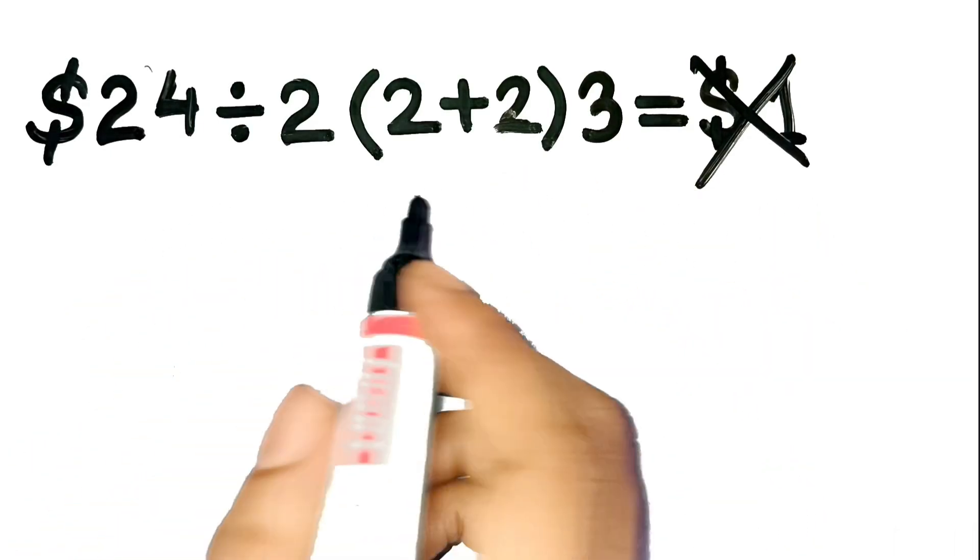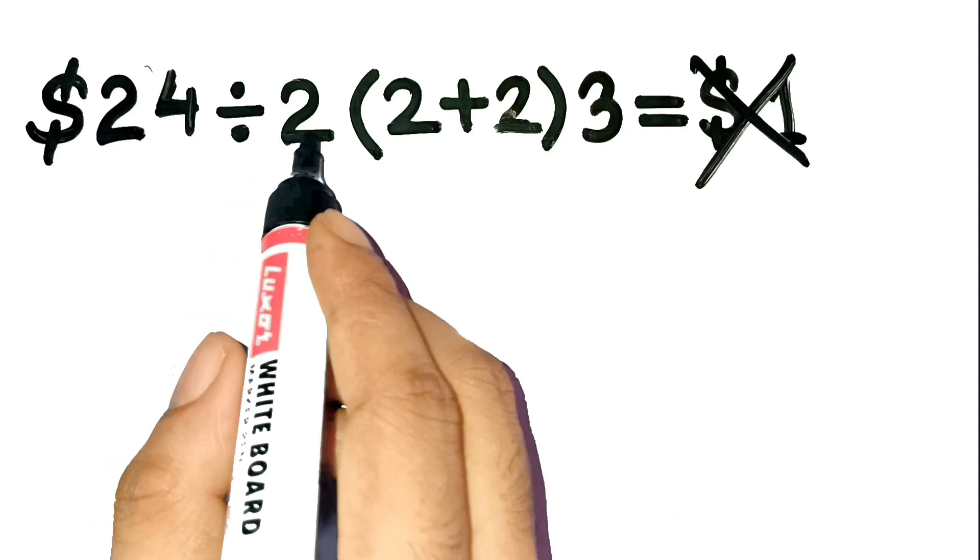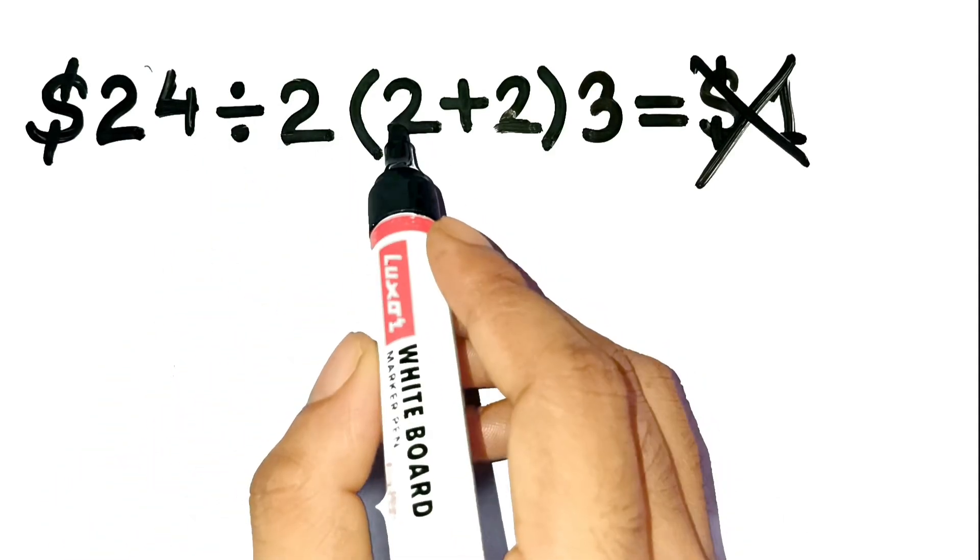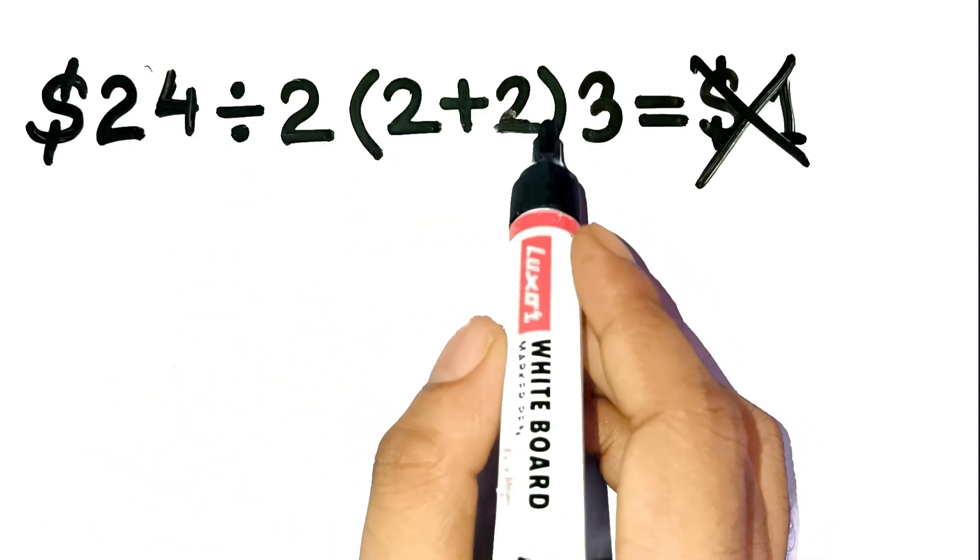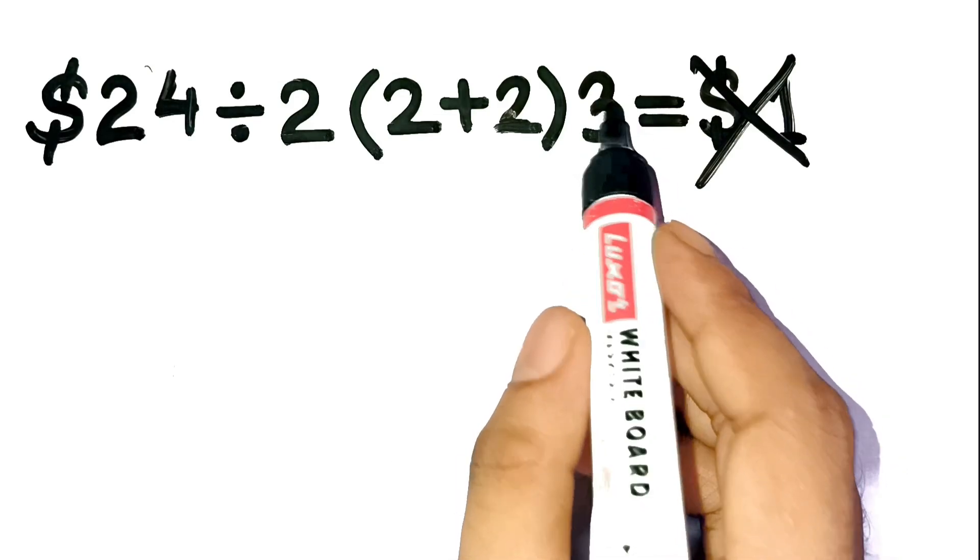Alright, we're looking at this: 24 divided by 2, open parenthesis, 2 plus 2, close parenthesis, then multiplied by 3.